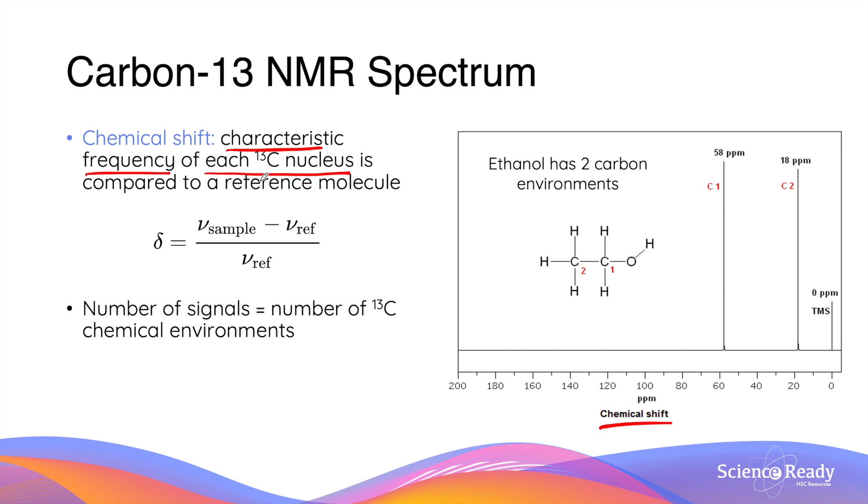The characteristic frequency is compared to that of a reference molecule which we'll talk about in a moment specifically in a mathematical formula where we find the difference between the frequency that's resonant to the sample that we're analyzing and the frequency of the reference molecule divided by the frequency of the reference molecule. This is how the chemical shift of each carbon-13 nucleus is calculated.